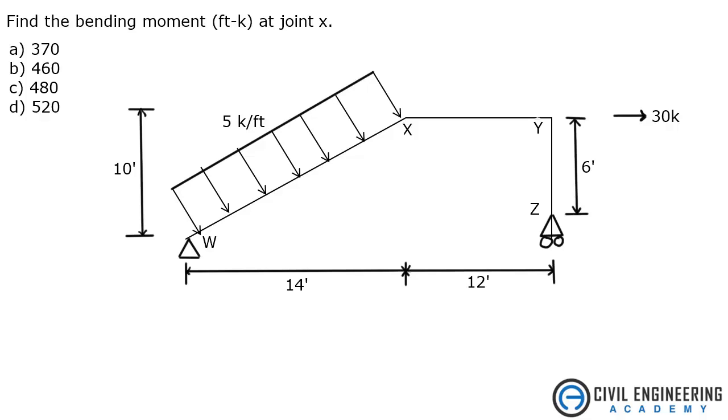Alright, it says find the bending moment in foot-kips at joint X. So we've got joints W, X, Y, and Z. We've got loads - 5 kip per foot, this is your distributed load. We've got all these dimensions here, and a 30 kip load over here pulling at Y. Have to remember that Z is on a roller, so we've got a vertical load. Here's the Y, and we've got this going on - we've got a WY and a WX.